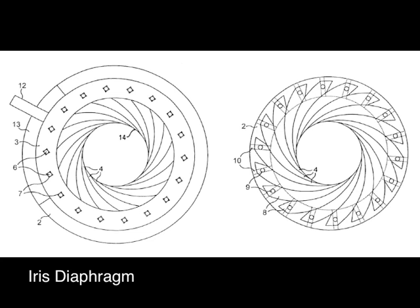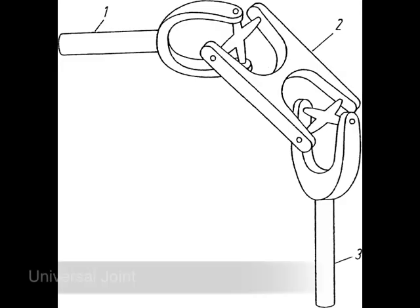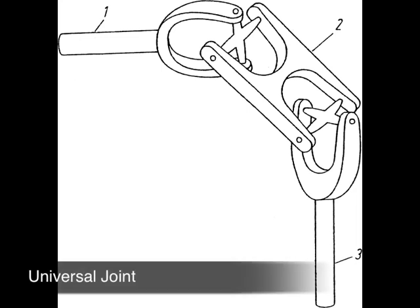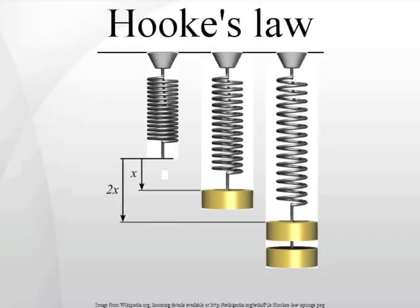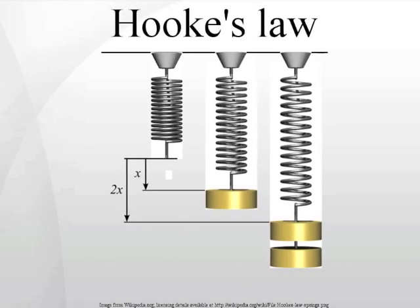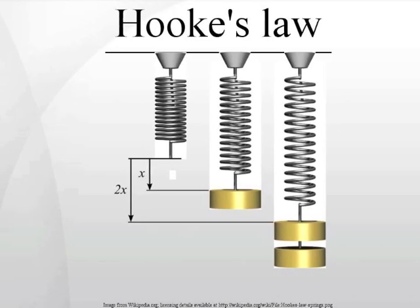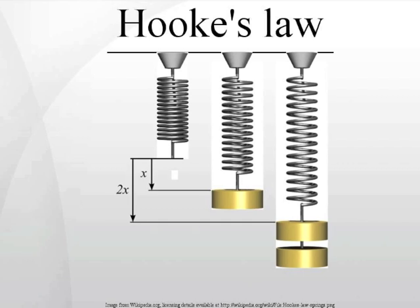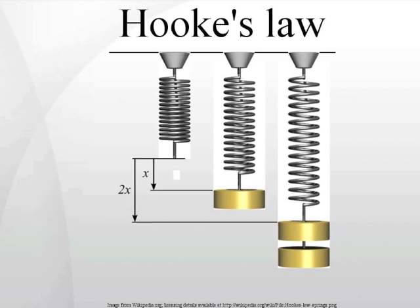Additionally, Hooke was an inventor, making such things as the iris diaphragm, an early prototype of the respirator, and the universal joint, which is used in cars today. He also theorized the popular physics equation describing elasticity that is still used today, known as Hooke's Law.